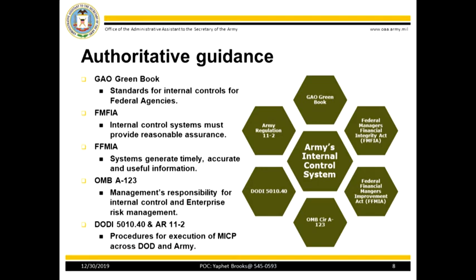The GAO Green Book prescribes standards for internal controls for federal agencies. The Green Book incorporates the Committee of Sponsoring Organizations of the Treadway Commission, more widely known as COSO, framework and principles for establishing, maintaining, and evaluating internal controls in the federal government.